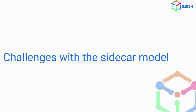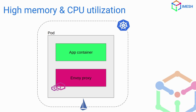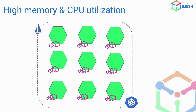Here are a few challenges with the sidecar model. Firstly, since each pod in a cluster has to be injected with Envoy proxies, that results in pretty high CPU and memory utilization. If you have thousands or tens of thousands of pods in a cluster that is Istio enabled, it can get pretty overwhelming and resource-intensive.